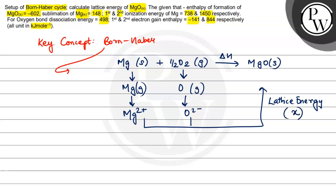So let's assume this to be x. Now let's write all the values everywhere. So first is sublimation. That is 148, right? Kilojoule per mole.